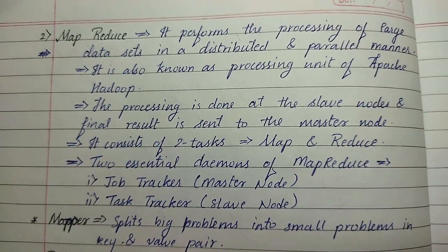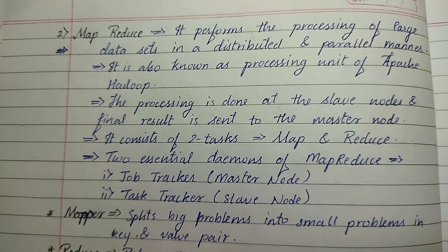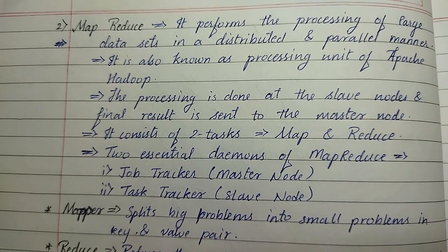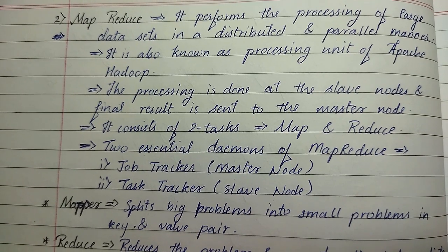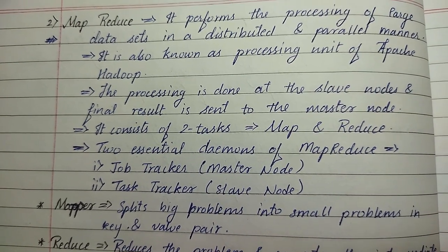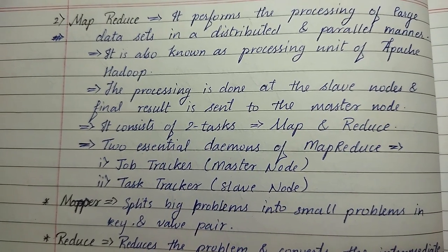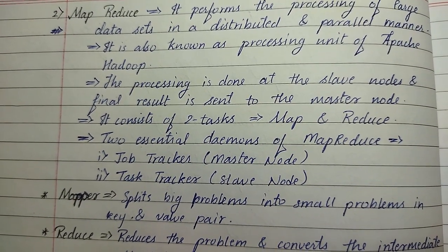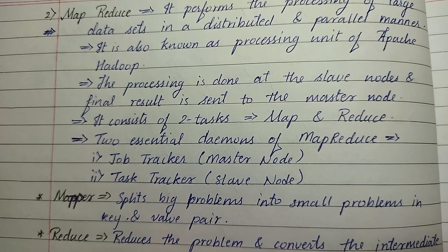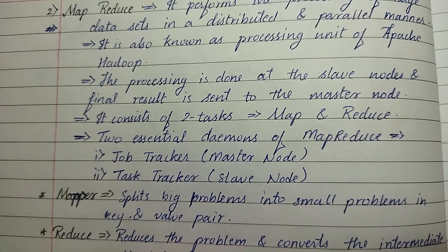The second is MapReduce. It performs the processing of large data sets in a distributed and parallel manner. It is also known as the processing unit of Apache Hadoop. The processing is done at the slave nodes and the final result is sent to the master node. It consists of two tasks: map and reduce.